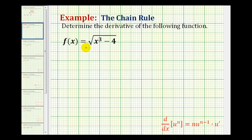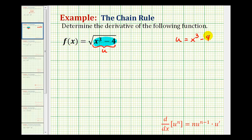The chain rule tells us that to determine the derivative of a composite function, we need to determine the derivative of the outer function and then multiply it by the derivative of the inner function. When we have a composite function, we want to let u equal the inner function. So in this case, u would be x³ minus 4. Let's go ahead and write that out: u = x³ - 4.